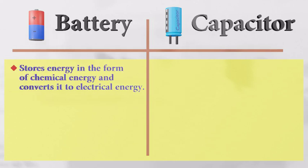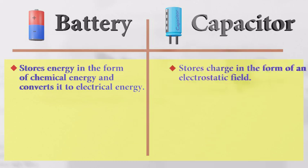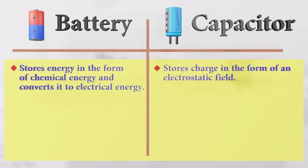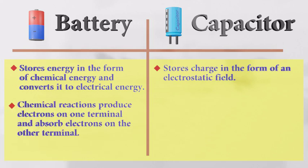A battery stores energy in the form of chemical energy and converts it to electrical energy. In a battery, chemical reactions produce electrons on one terminal and absorb electrons on the other terminal.